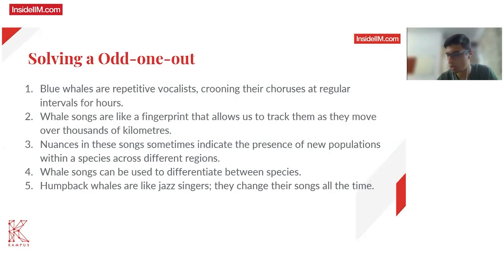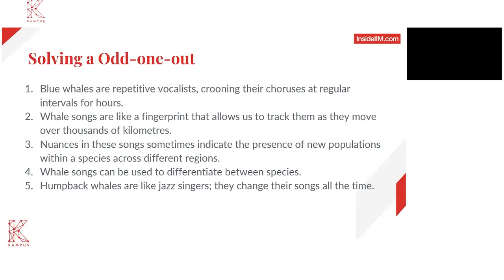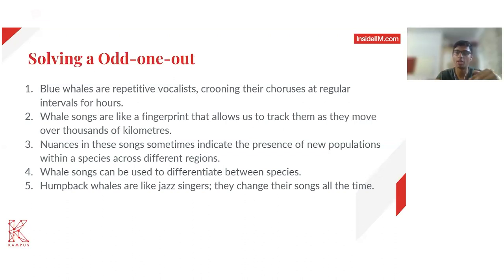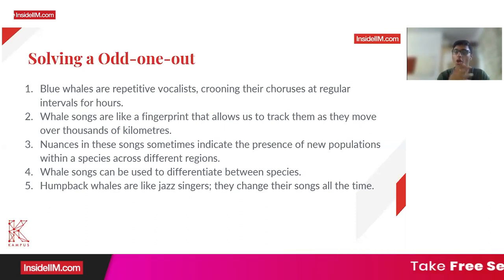Solving the odd one out can be done in two ways. Firstly, it's not always necessary that four of the five sentences will form a passage. A way of solving this is to put every sentence into a theme, and something that is outside the theme is the odd one out.